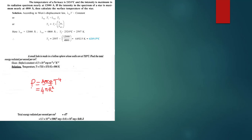It means the area is already included in what we are asked to find. So what they are asking is power per area, which equals Stefan's constant times emissivity times T to the power 4.